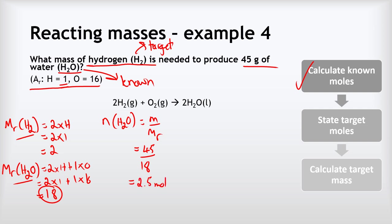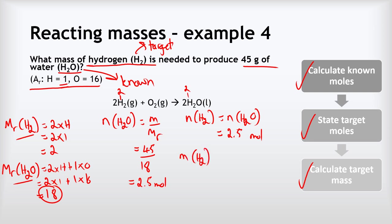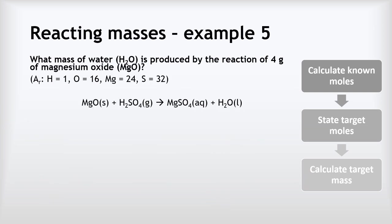Hydrogen and water are in a two-to-two ratio, which is the same as a one-to-one ratio, so however many moles of water we have, we have the same number of moles of hydrogen. Therefore the number of moles of H2 equals 2.5 moles. The mass of H2 = 2.5 multiplied by its Mr of 2, giving a final answer of 5 grams.